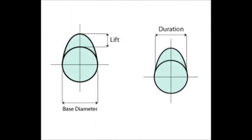Duration. Duration is how long the cam holds the valves open. It's expressed in degrees of crankshaft rotation. Remember, the cam rotates at half the speed of the crank. A 280 degree duration cam holds the valves open longer than a 260 degree duration cam. Holding the valves open longer allows more air and fuel into the engine and also allows more to get out through the exhaust.